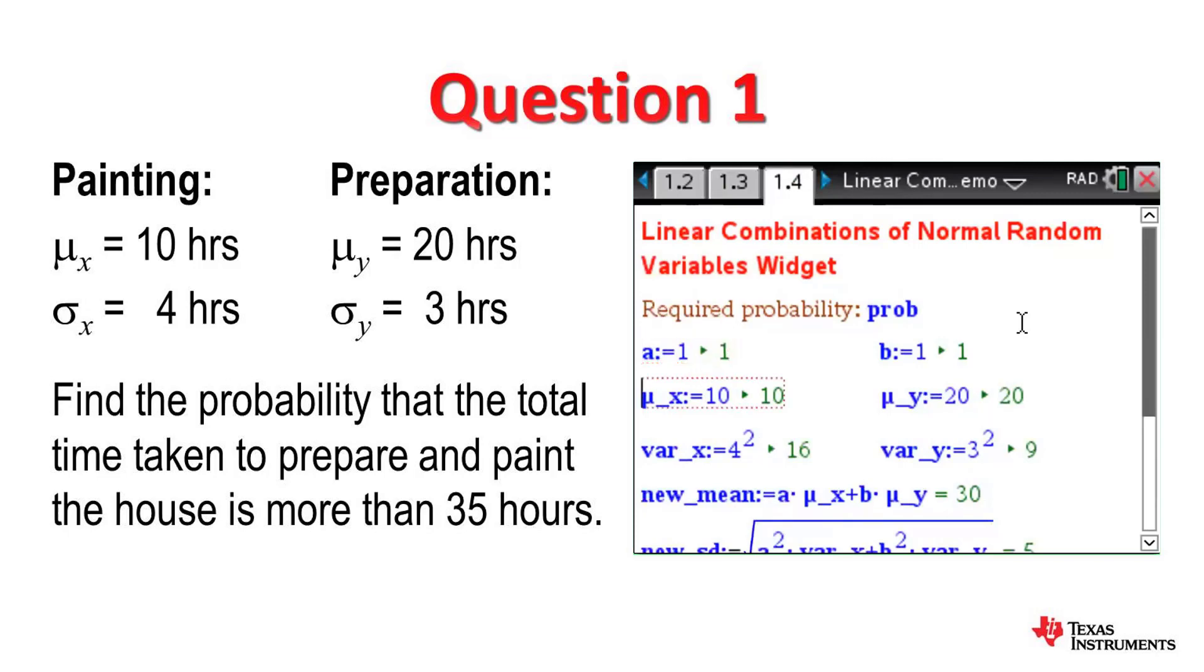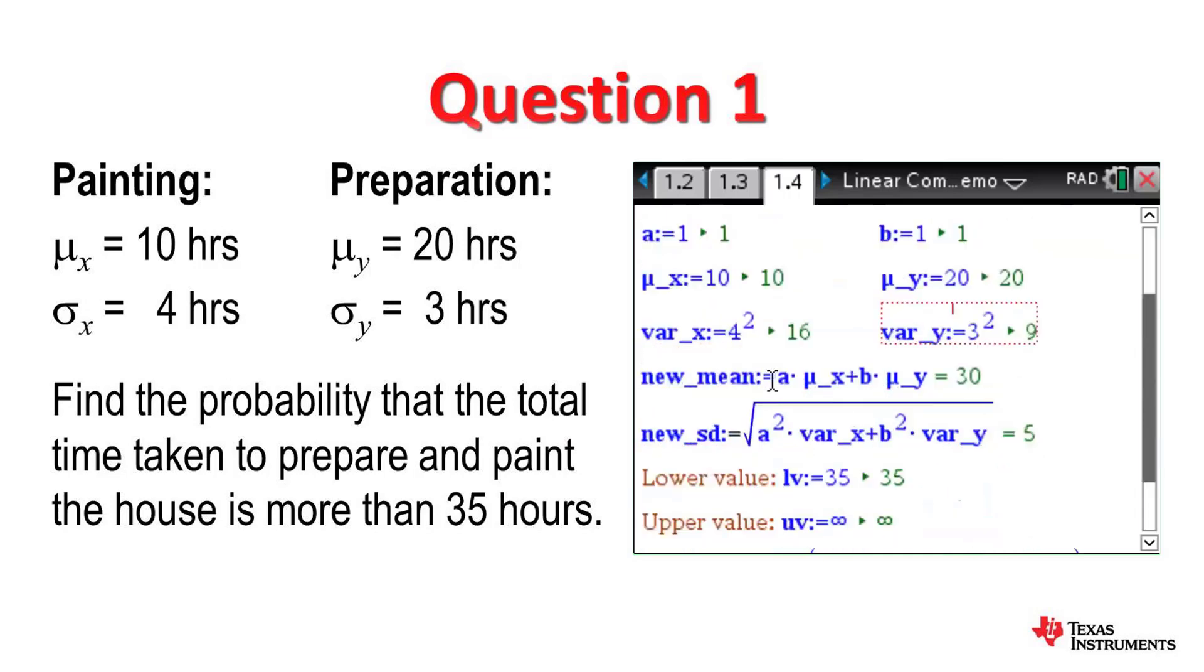This is already being set out for you, so we're showing you that the blue is the input and the green is the output. So a and b both equal 1, E of x as we said is equal to 10, E of y is equal to 20, VAR of x is equal to 4 squared which is 16, VAR of y is 3 squared which is 9. Then what we've done here, notice that throughout we've used the assign command, and the assign command is accessed by pressing control and then the symbols template. We can assign the new means to be a times E of x plus b times E of y, so we get a value of 30. The new standard deviation is the square root of a squared times var of x plus b squared times var of y.